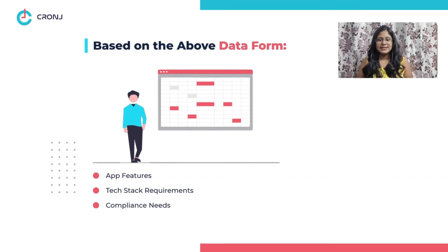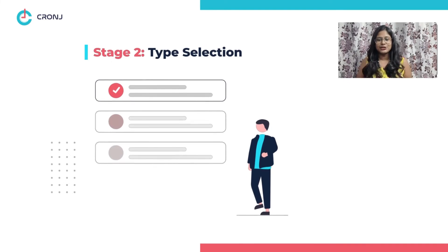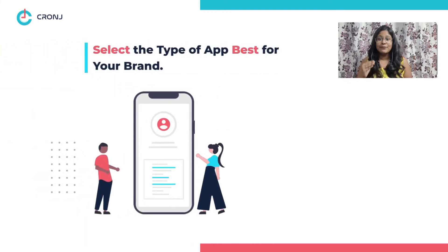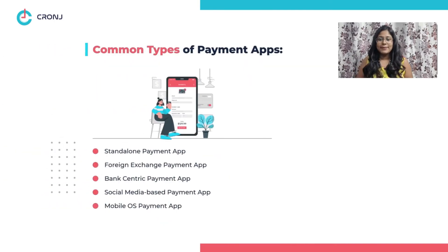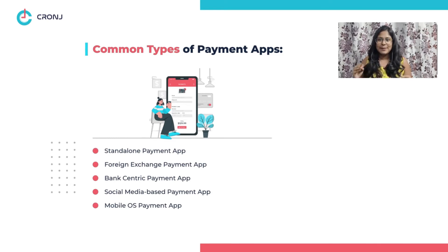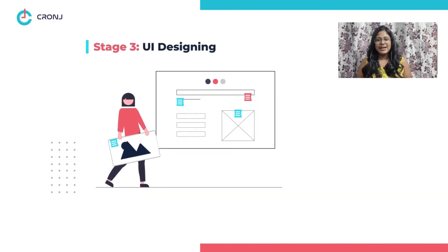Stage two: type selection. Next, decide on the type of mobile payment app that aligns with your brand value, goals, and mission. Some common types of payment apps include standalone payment app, foreign exchange payment app, bank-centric payment app, social media-based payment app, and mobile OS payment app.